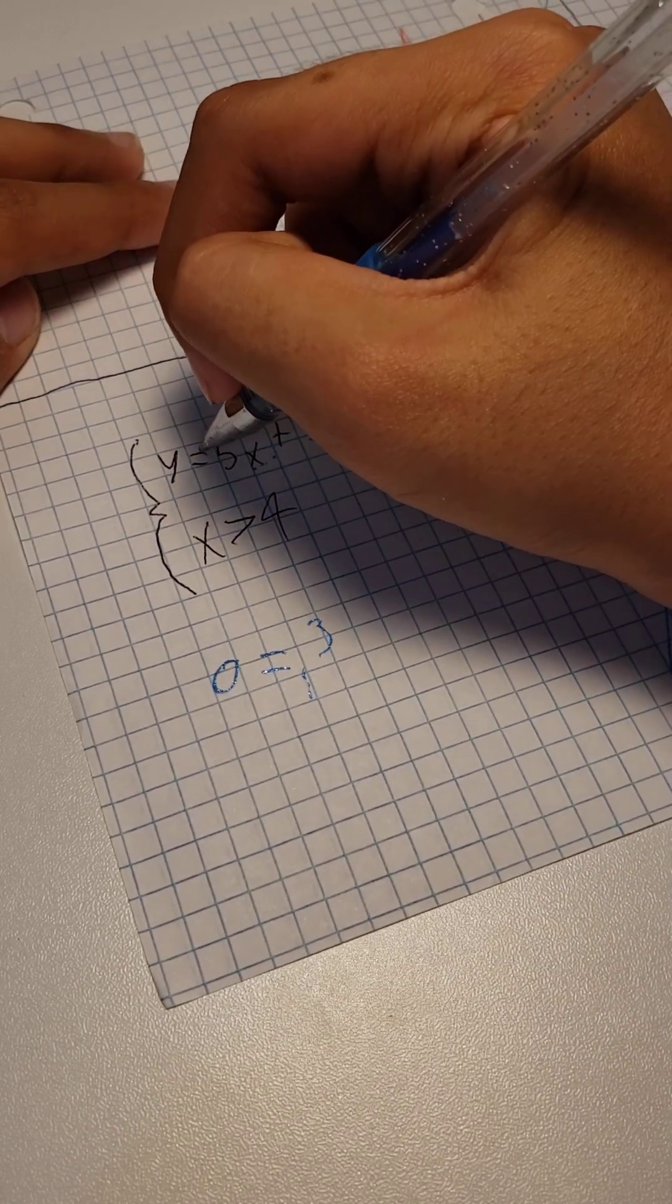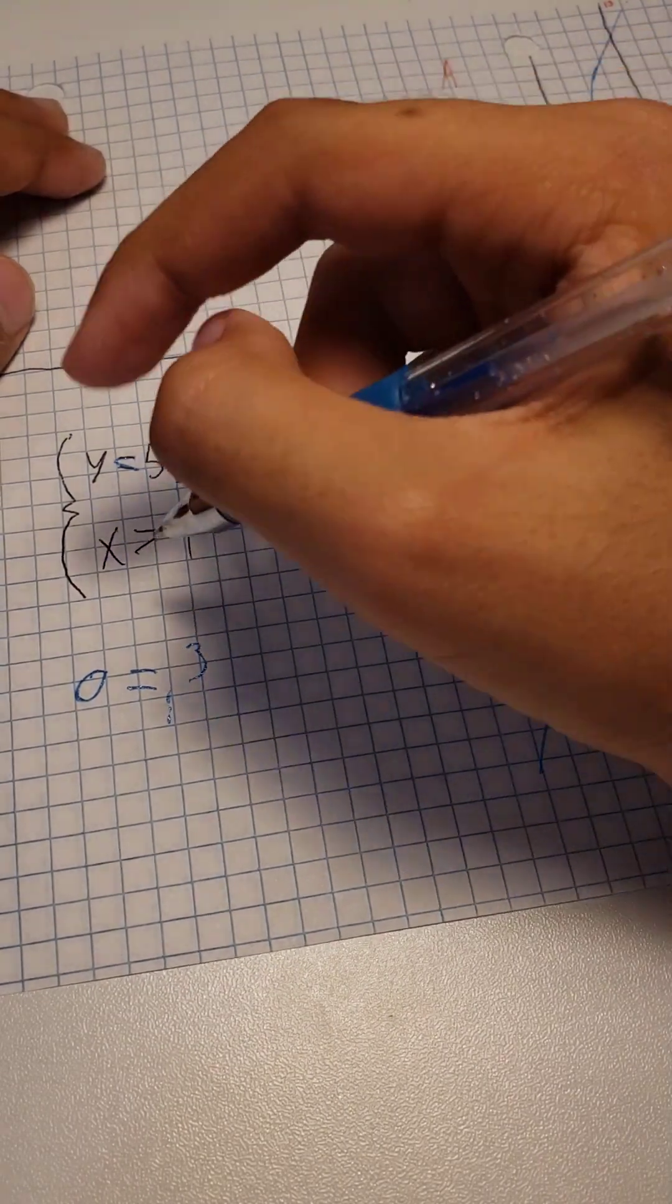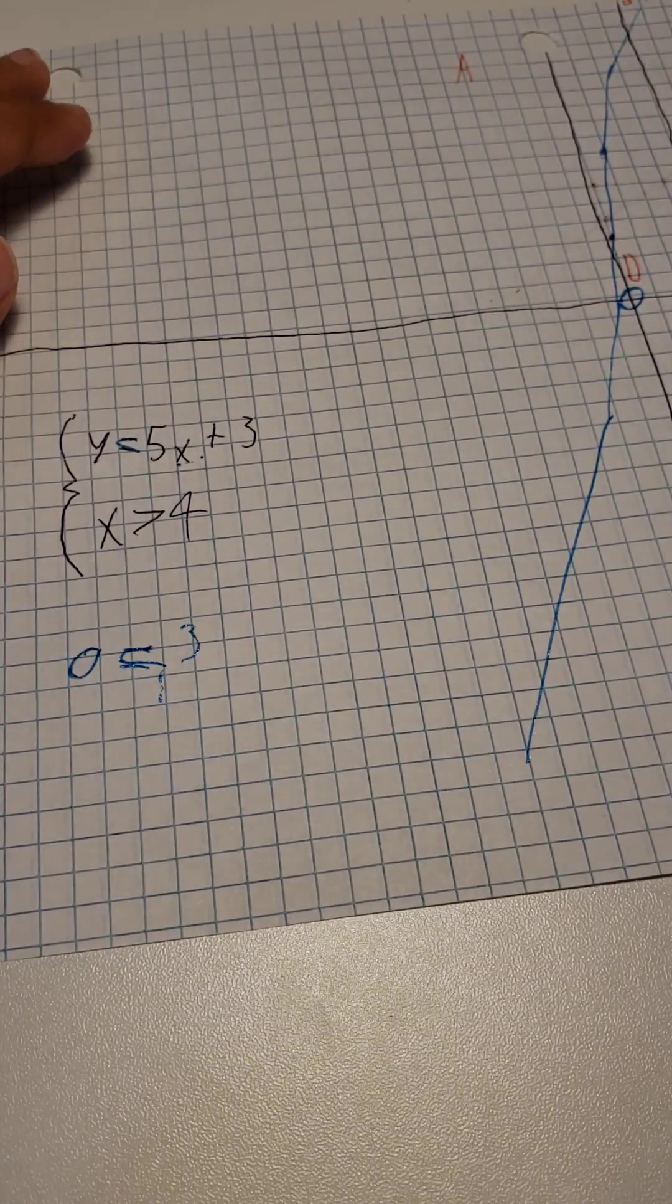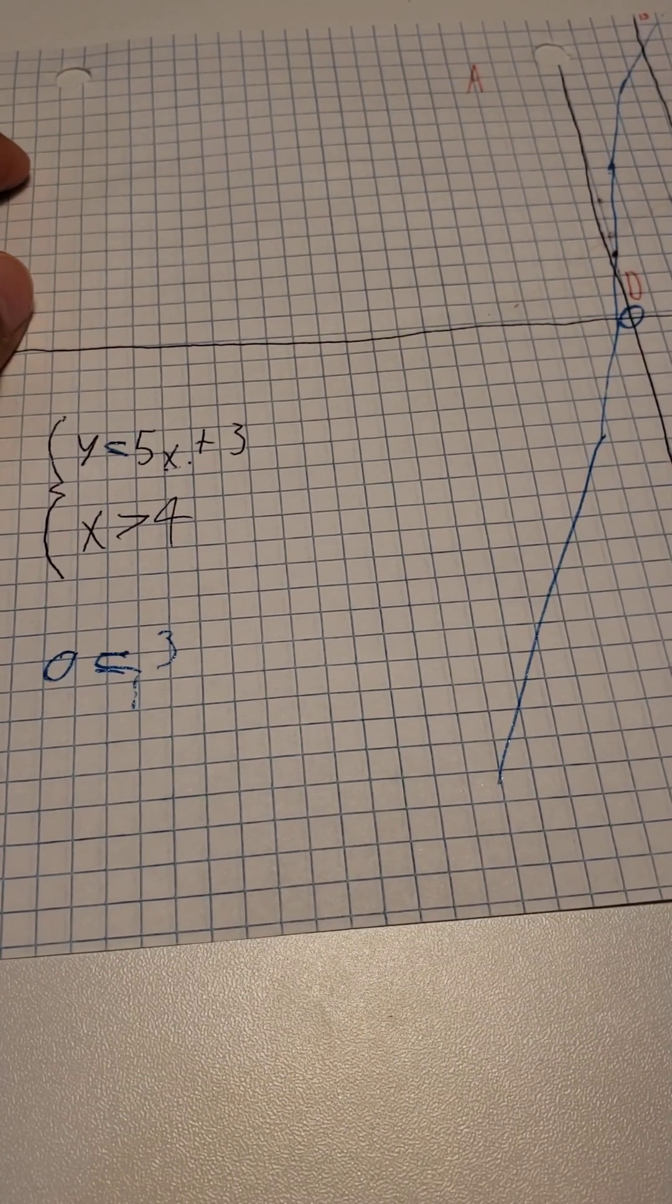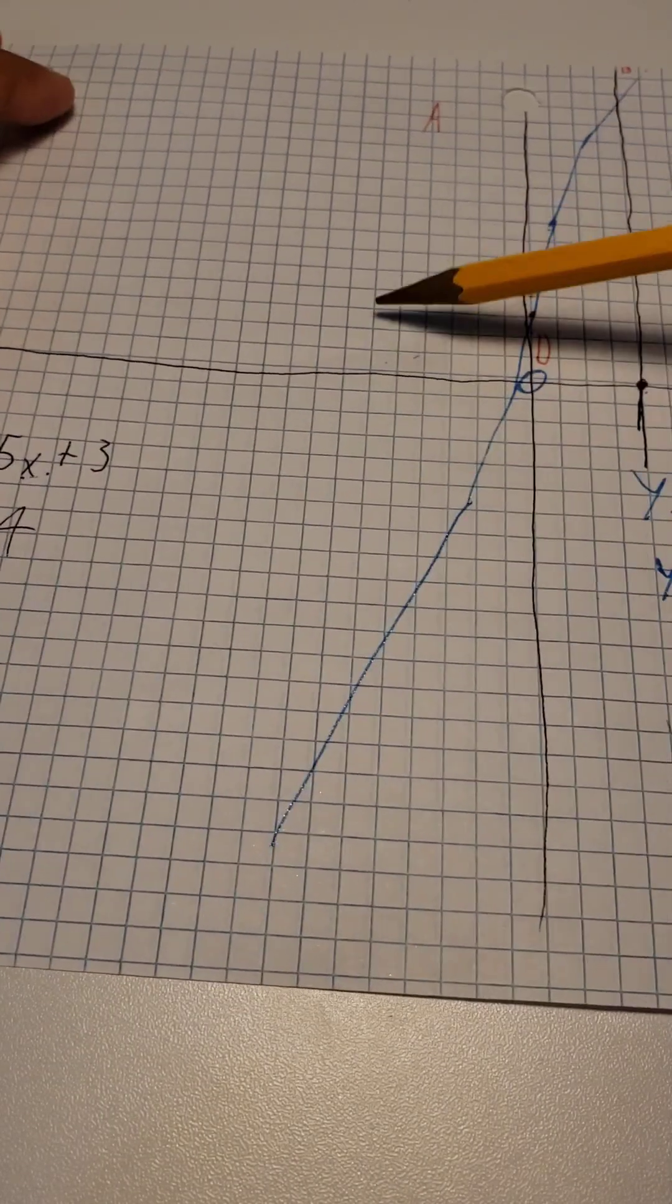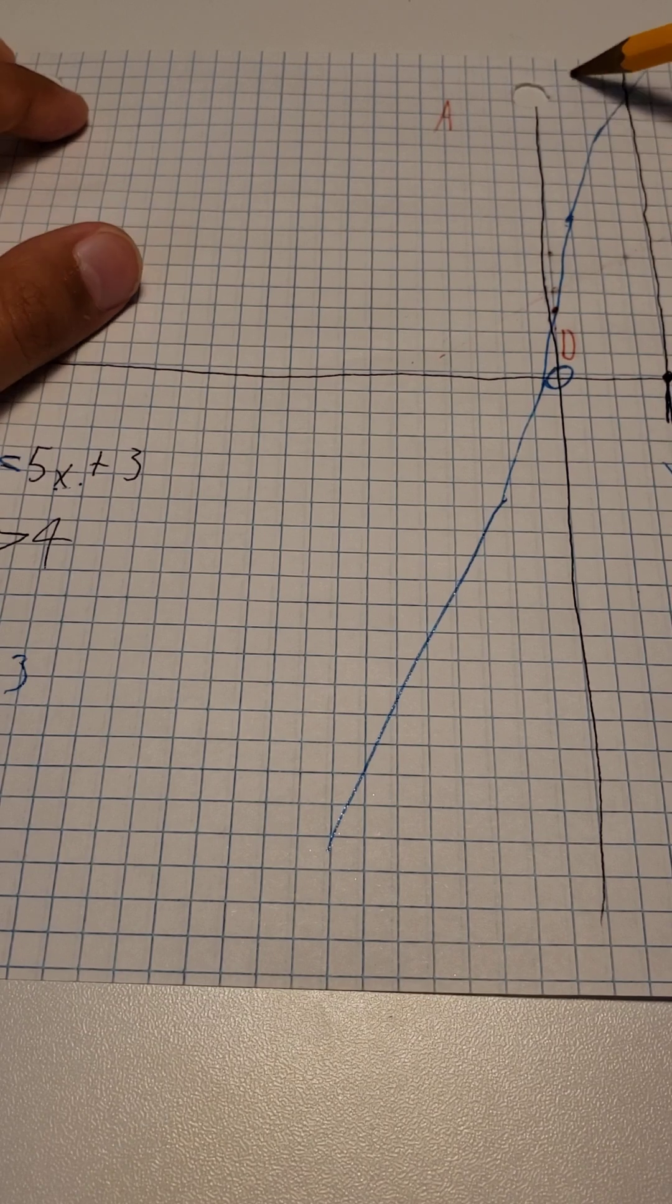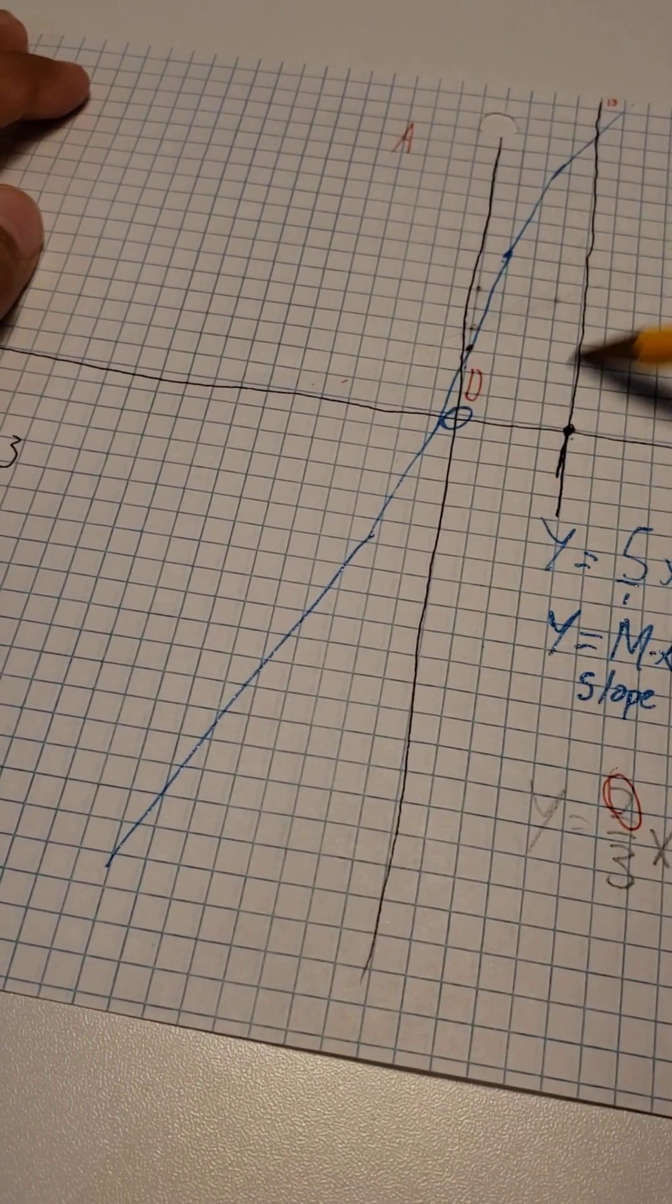Then, we have 3 is greater than 0, which is correct. Which means for this line, the actual equal part is going to be this area.